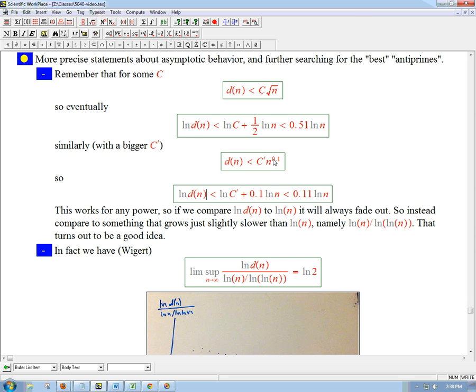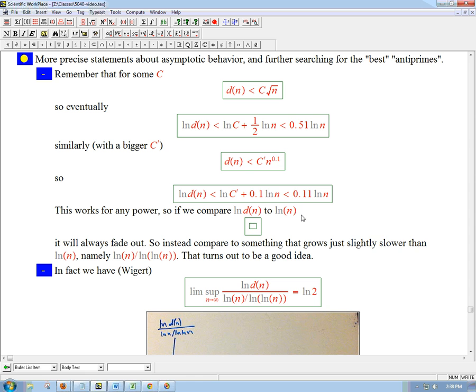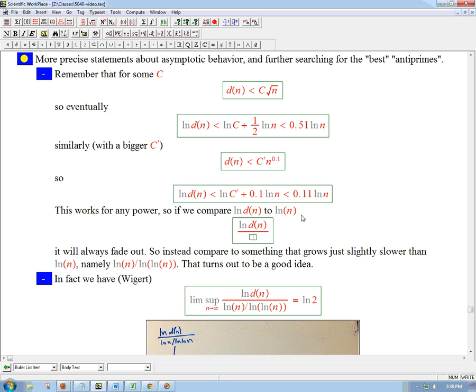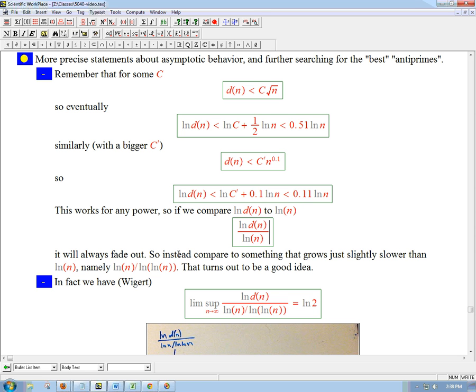So the key thing is that if this is true for every power, what this means is that if we compare ln(d(n)) to ln(n), if we take the ratio ln(d(n))/ln(n), it's always going to go to 0, it's going to fade out. So what if we compared it to something that grows just slightly slower than ln(n)? Turns out, if you take ln(n), that's slow growing, but we want it to slow it down even a little bit, we're going to divide it by ln(ln(n)). One note, I'm using ln to be clear here. If you look at the literature, when number theorists use LOG, they almost always mean the natural log.